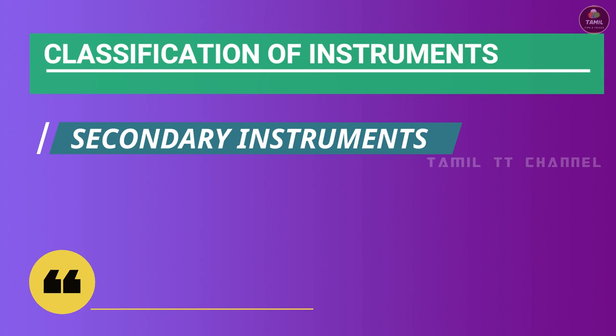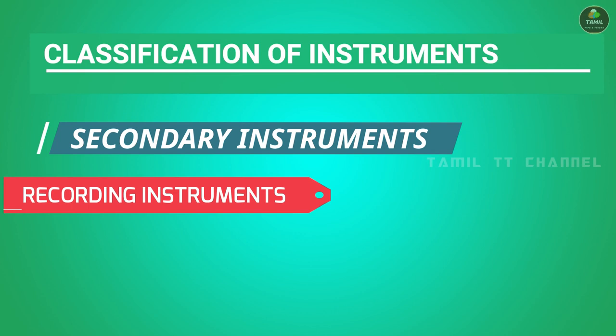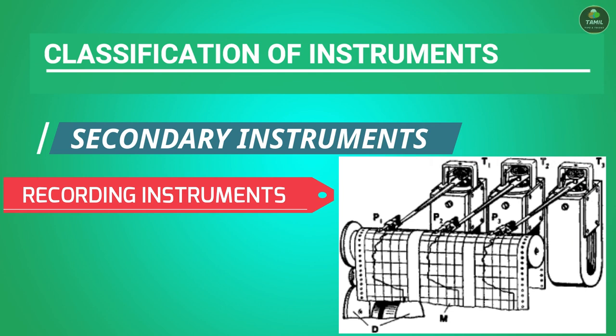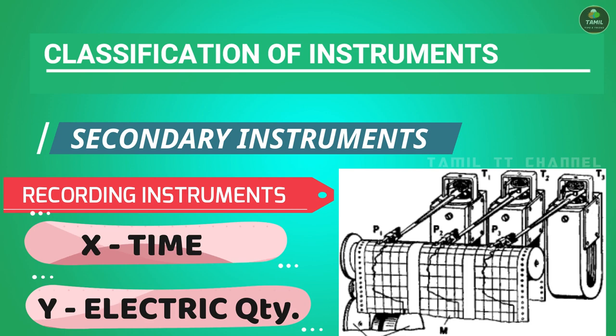The second type is the recording instrument. Recording instruments record readings over time. They use a pen and graph. The graph has a rotating drum at uniform speed. When the pen moves, it traces on the graph — the x-axis represents time and the y-axis represents the electrical quantity, such as current or voltage.